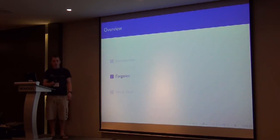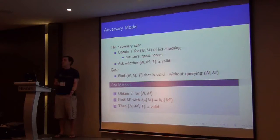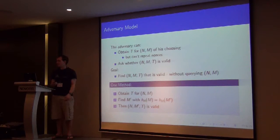So how do we forge with these forgeries? We're going to need to decide what we're going to let our adversary do. So we say that he can ask for, give us a message, and we'll tell him what a valid tag is, as long as he doesn't repeat the nonces.